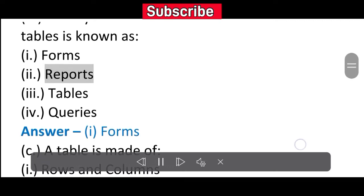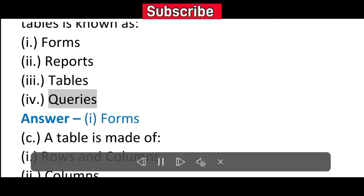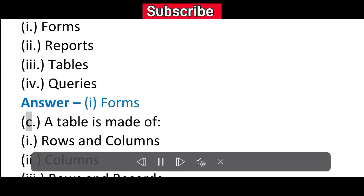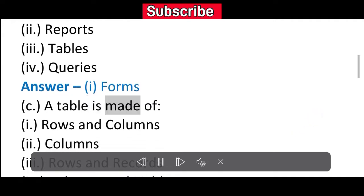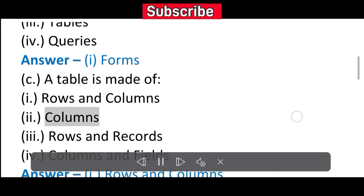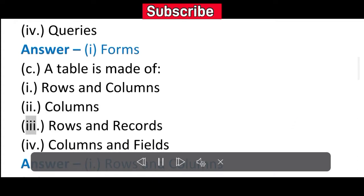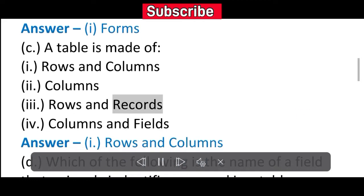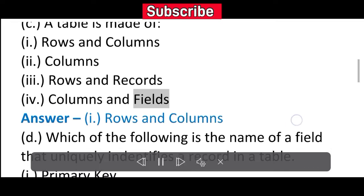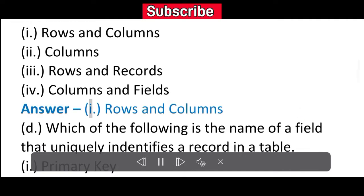C. A table is made of: (i) Rows and columns (ii) Columns (iii) Rows and records (iv) Columns and fields. Answer: (i) Rows and columns.